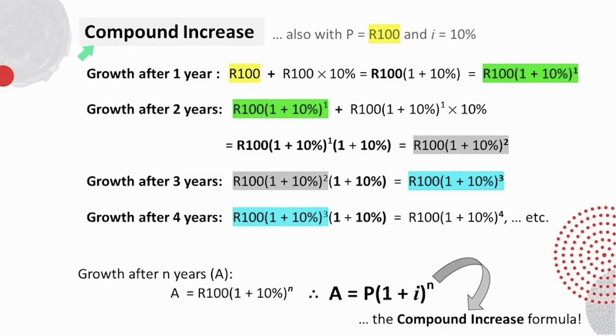Now, considering compound increase, also with an original value of 100 rand, and a rate of increase of 10%, to calculate the interest after one time period, we also first calculate 10% of the 100 rand, which is 10 rand. The difference for compound increase, though, is the amount we add each year needs to be recalculated at 10% of the accumulated amount after each time period. Therefore, growth after one year will be the 100 rand plus 10 rand, which is 110 rand.